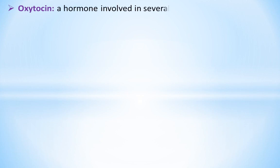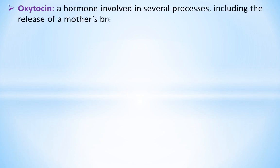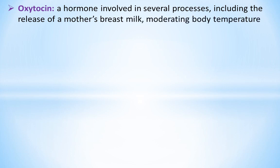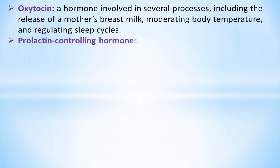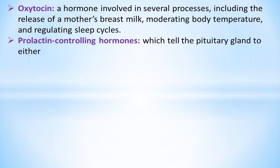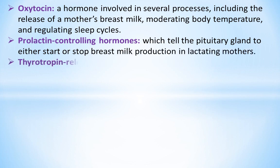Oxytocin is a hormone involved in several processes, including the release of a mother's breast milk, moderating body temperature, and regulating sleep cycles. Prolactin-controlling hormones tell the pituitary gland to either start or stop breast milk production in lactating mothers.